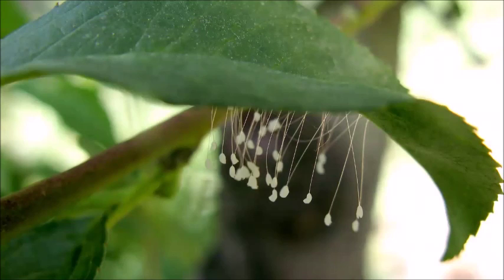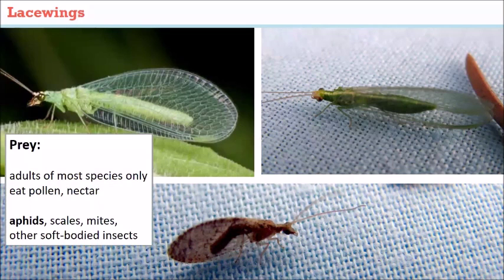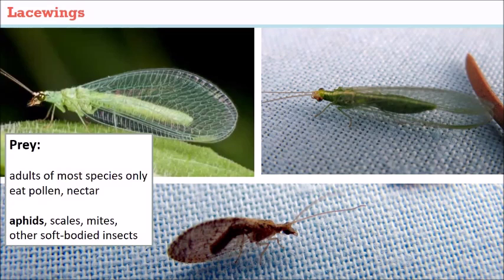Lacewings are another very important predator in orchards — we have green lacewing and brown lacewing. What's different about lacewings is that the adults typically only feed on pollen and nectar; they're not predacious. It's the larvae that feed on the same soft-bodied insects as lady beetles, with aphids being most common.